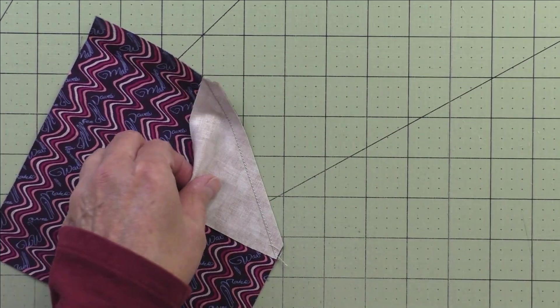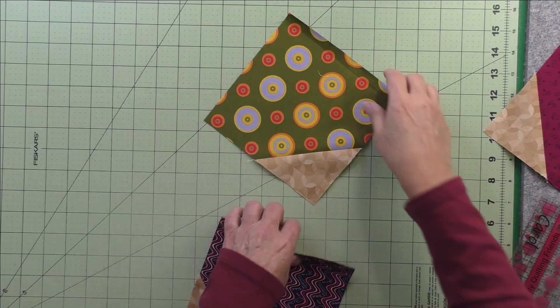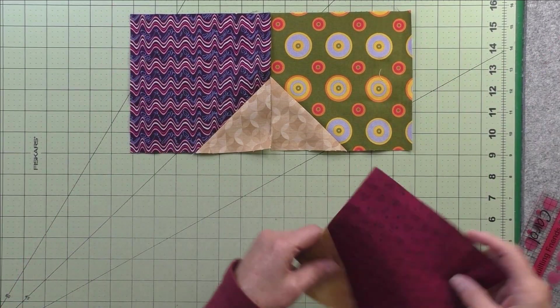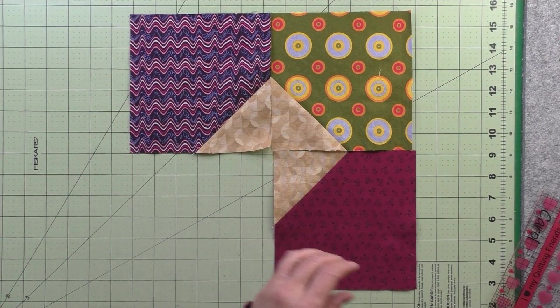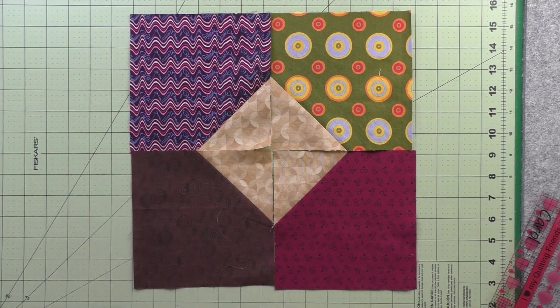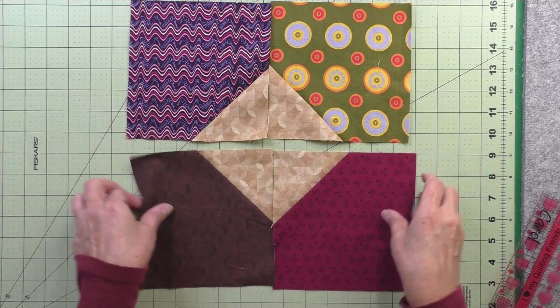Now you'll press the seam open, and here are some that are pressed open. Now we'll just put the blocks together like this, however you think they look pretty together, and then we'll stitch these two together and these two.